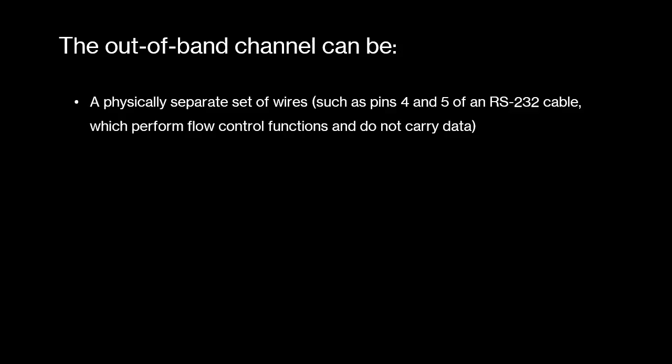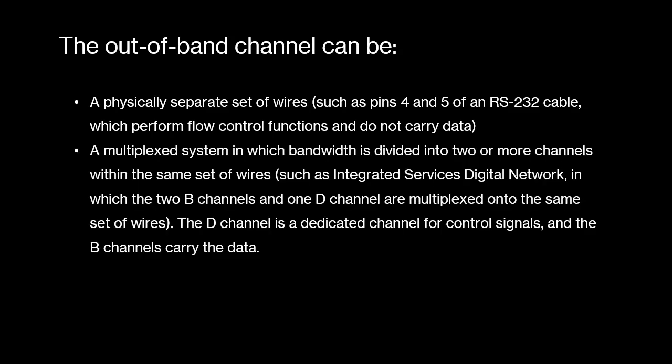The out-of-band channel can be a physically separate set of wires, such as pins 4 and 5 of an RS-232 cable, which perform flow control functions and do not carry data. Alternatively, it can be a multiplex system in which bandwidth is divided into two or more channels within the same set of wires, such as ISDN, in which the two B-channels and one D-channel are multiplexed onto the same set of wires.